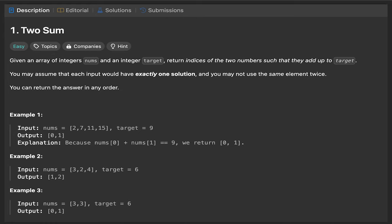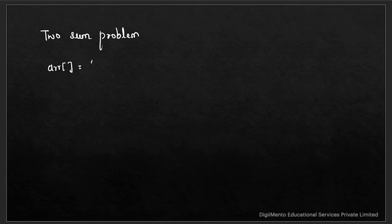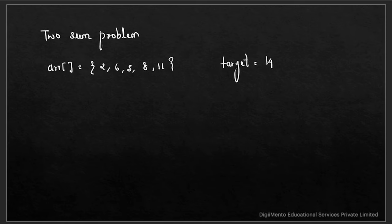So let's start with the question: what is two-sum? In this problem we are given an array with values 2, 6, 5, 8, and 11. The target value is given as 14. We have to find which two indexes will make the sum equal to the target value. As we know, indexing in an array starts with 0, so the indexes are 0, 1, 2, 3, and 4.